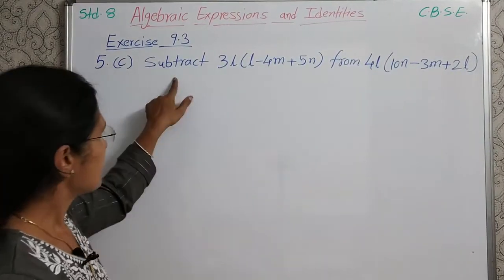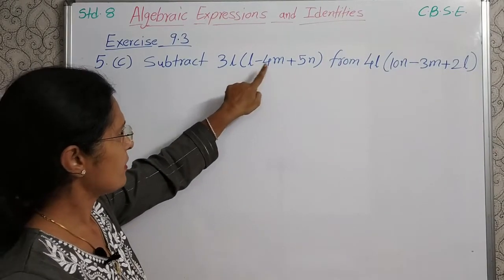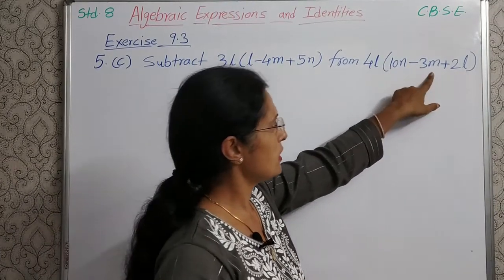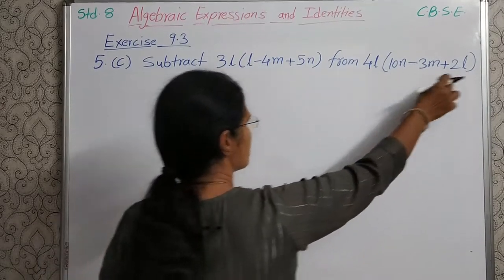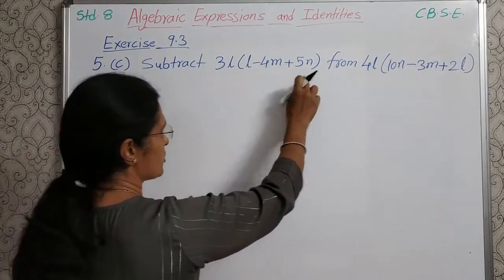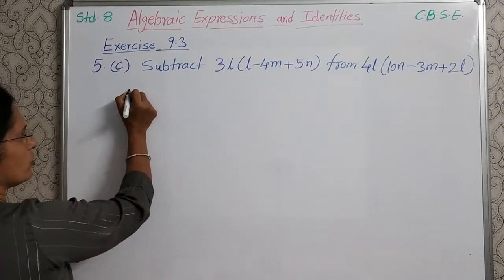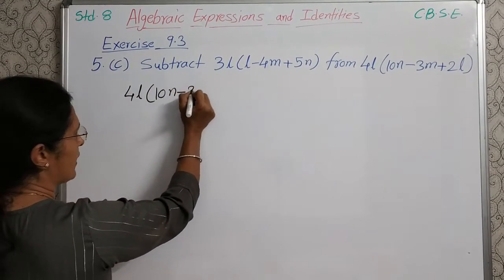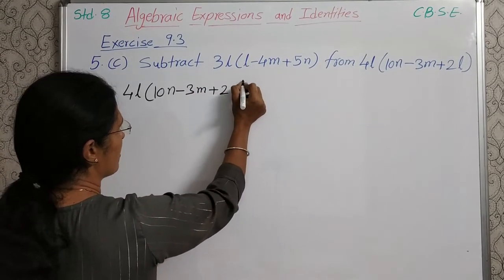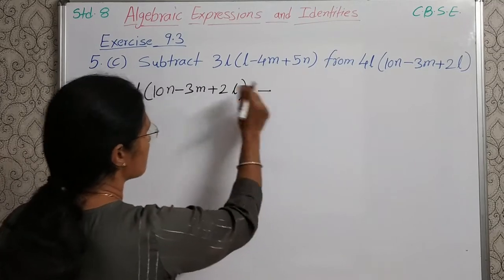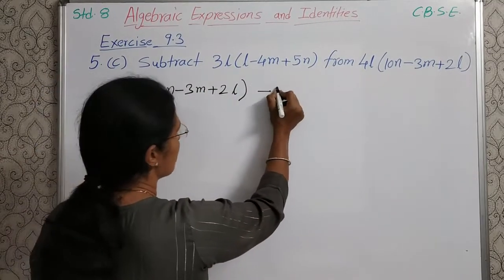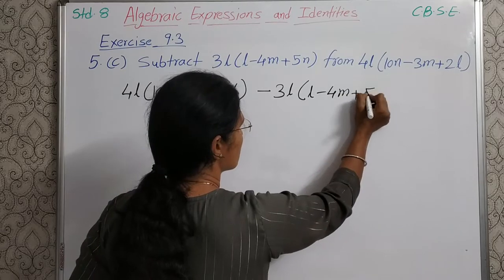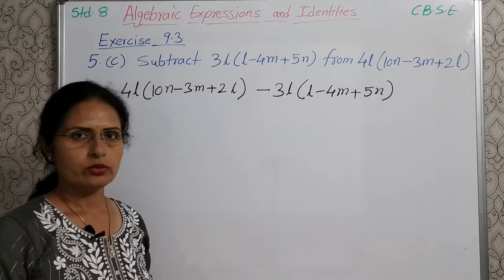Next sum: subtract 3L into bracket L minus 4M plus 5N from 4L into bracket 10N minus 3M plus 2L. So from this we have to subtract the first expression. First we will write 4L into bracket 10N minus 3M plus 2L, from this subtract 3L into bracket L minus 4M plus 5N. Now let us solve this expression.